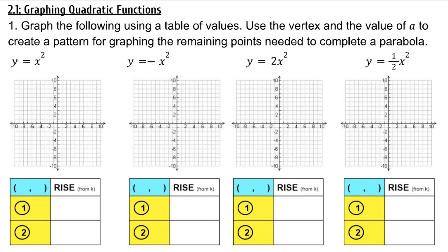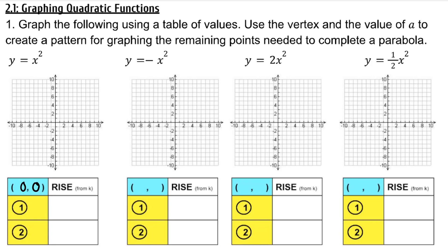Graph the following using a table of values. Use the vertex and the value of a to create a pattern for graphing the remaining points needed to complete a parabola. a is the coefficient of x squared, and since we will be using a to create a pattern, let's first identify what a is in our parent graph.